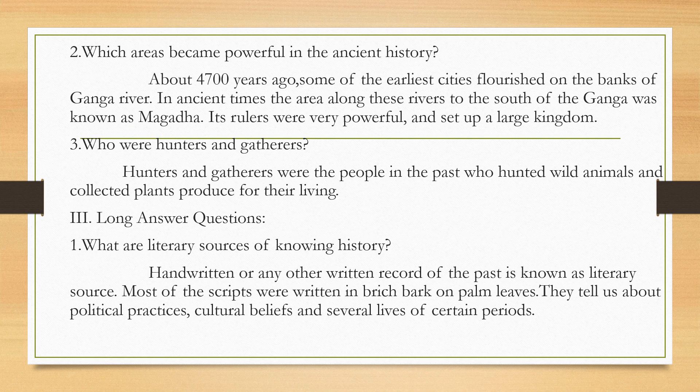Second question: which areas became powerful in ancient history? About 4700 years ago, some of the earliest cities flourished on the banks of the Ganga river. In ancient times, the area along these rivers to the south of the Ganga was known as Magadha. Its rulers were very powerful and set up a large kingdom.